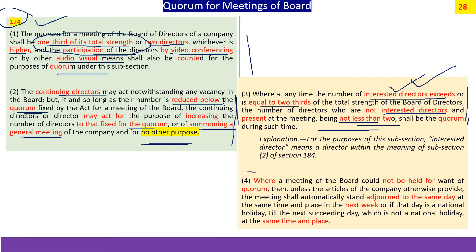Fourth, if a meeting has been convened but cannot be held because there was no quorum, the meeting of the board gets automatically adjourned to the same day next week at the same time and place. These are the four basic things which section 174 covers on quorum.